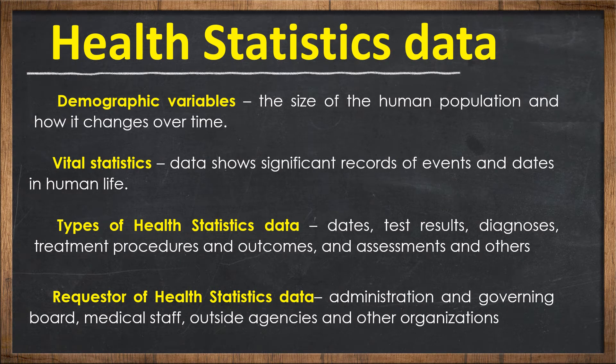Demographic Variables: While healthcare is concerned mainly with human health conditions, characteristics of the human population must also be studied. Data which describe the human population — such as age, gender, income, and health status — need to be considered in healthcare analysis. This data is referred to as demographic variables. The size of the human population and how it changes over time is also considered a demographic variable.